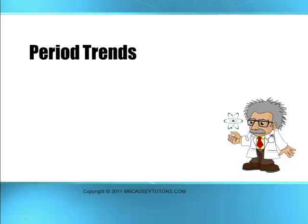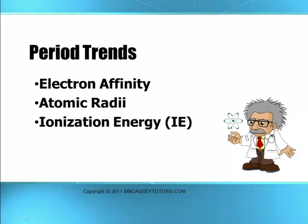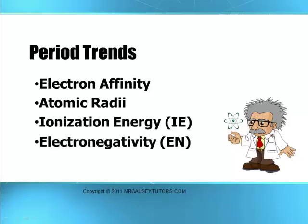Periodic trends — there are four main periodic trends: electron affinity, atomic radii, ionization energy, and electronegativity. Now, electron affinity we're not going to pay a whole lot of attention to. Atomic radii we want to look at to get an idea of how the radii affects the volume of atoms. What's really important is ionization energy and electronegativity, which we'll use in depth for making decisions about chemical bonding.